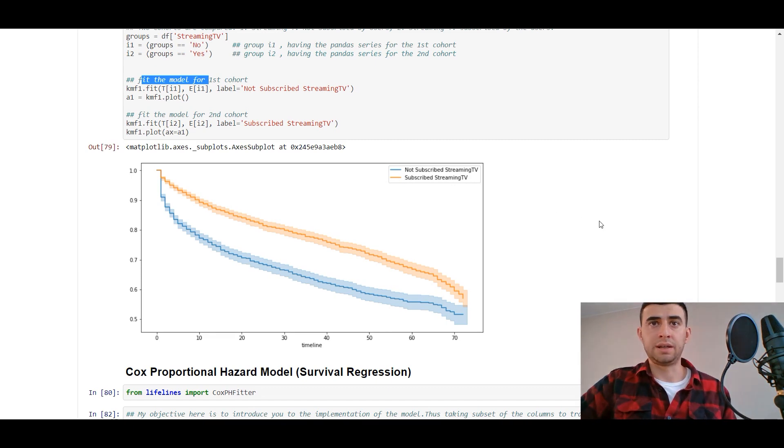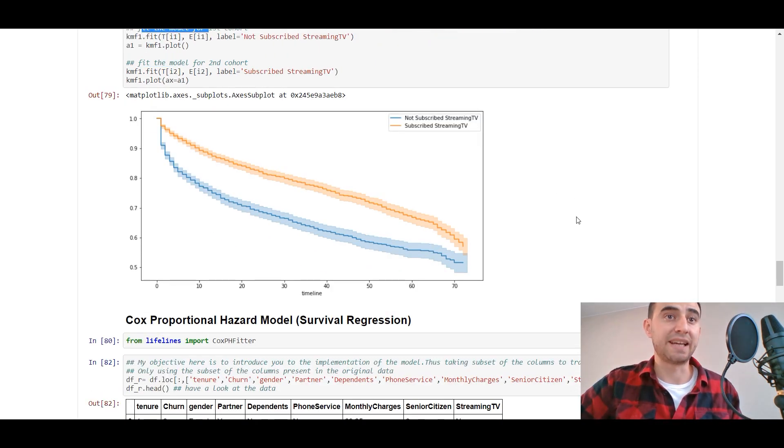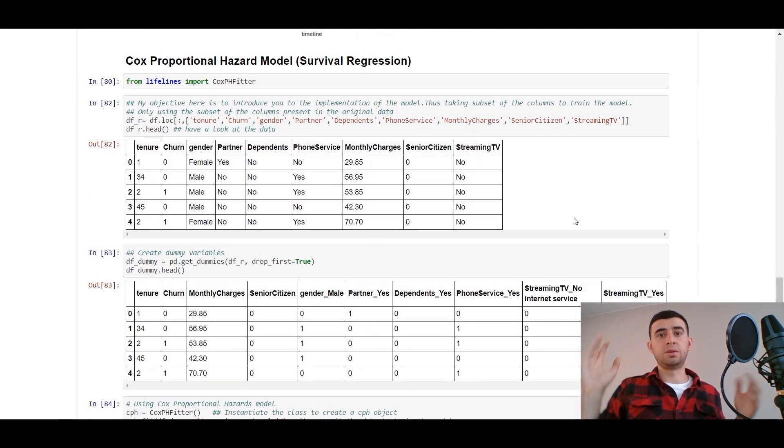If the telecom operator wants to lower the churn rate, it's important to develop the streaming TV for its users so that users can subscribe to the streaming TV in the telecom operator application. The next question is: we've got all the data from the telecom operator and we want to know what columns, what features influence most on churn rate. Here it is, we've got the lifelines library, and from the lifelines library we got a Cox proportional hazard model, it's called Cox proportional hazard fitter.